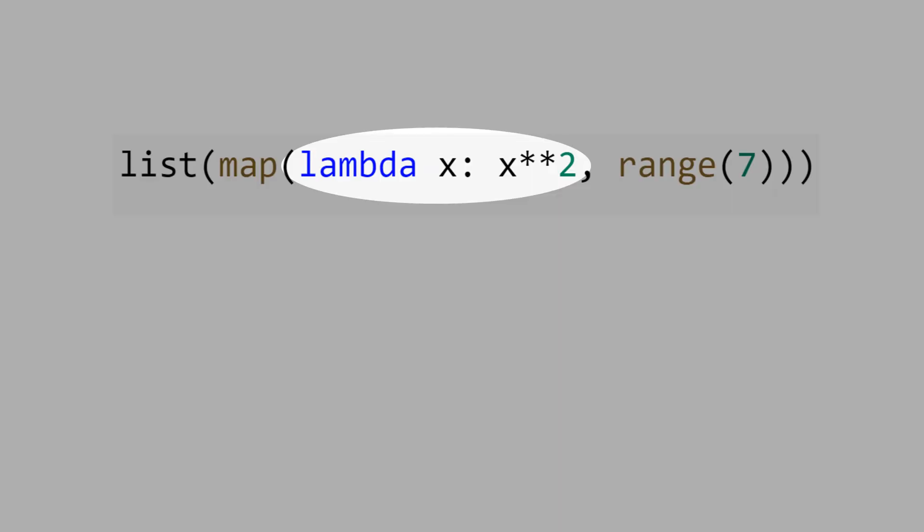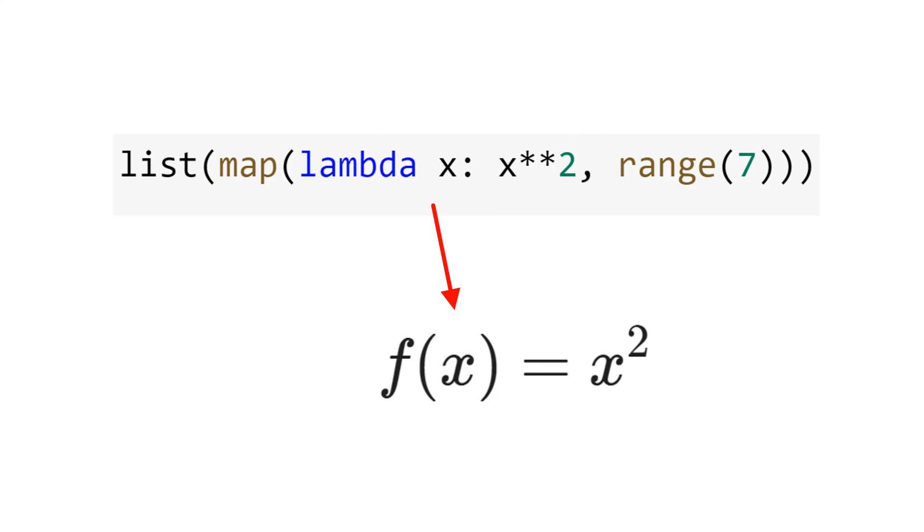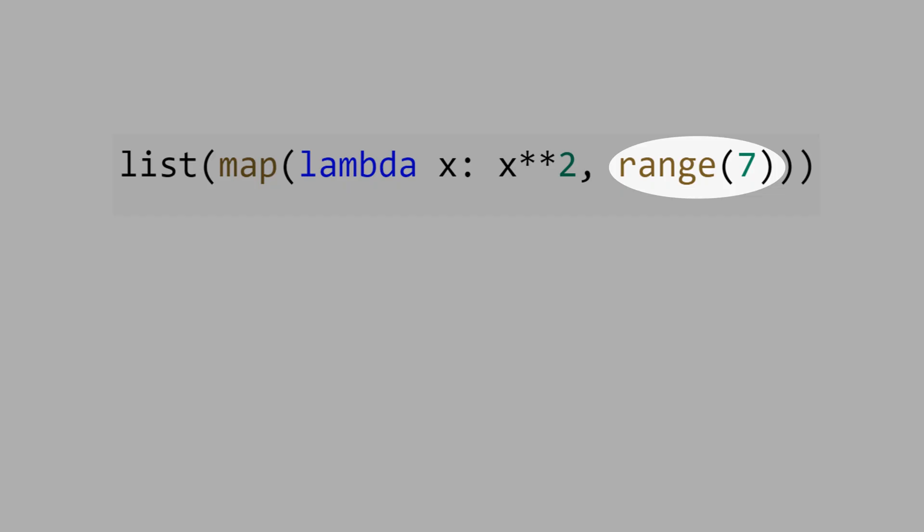Now let's use the lambda function to get the same result. The lambda function just matches the mathematical function f(x) equals x squared. Range 7 generates the inputs for the lambda function.